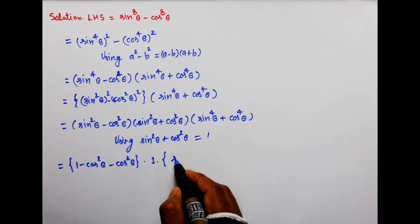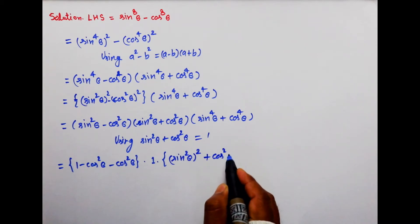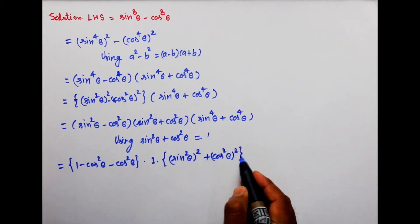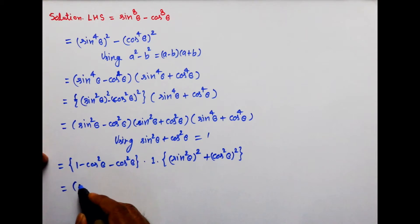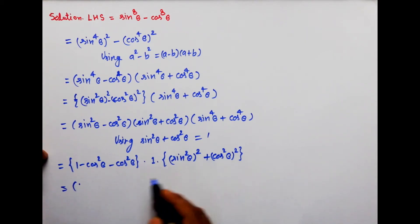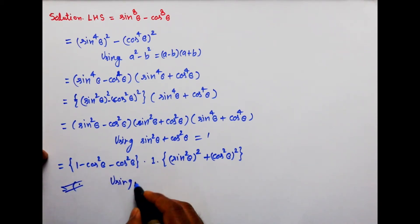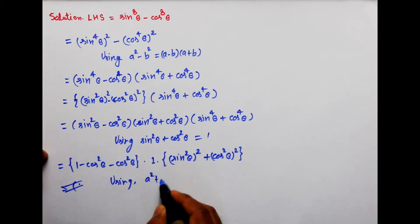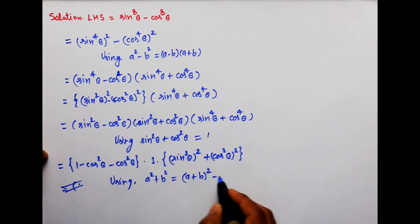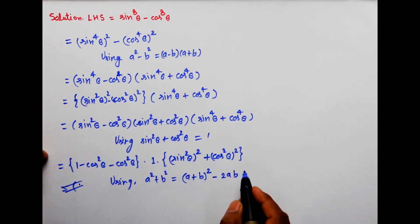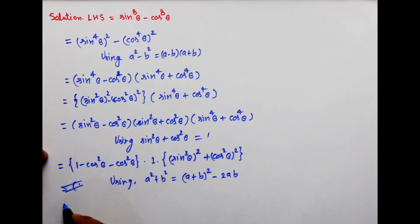Ab ise bachyo aise likh paenge: (sin square theta) whole power 2 aur (cos square theta) whole power 2. Power 4 ko power 2 mein tod liya. Yahan hum yeh formula use karenge: a square plus b square = (a plus b) whole power 2 minus 2ab. Yahan a = sin square theta aur b = cos square theta.